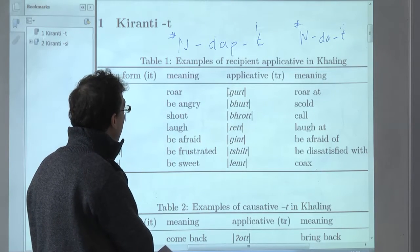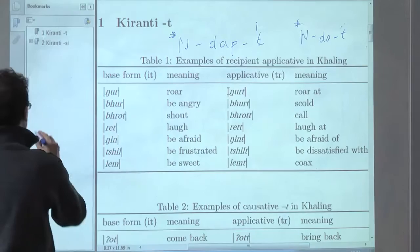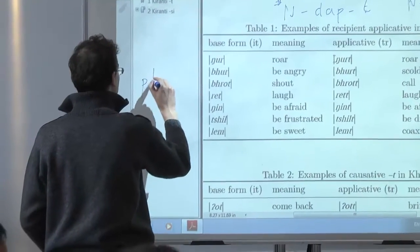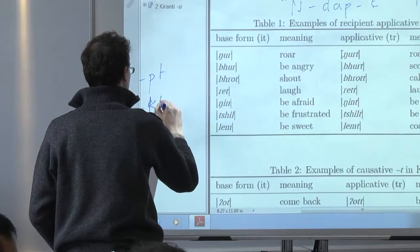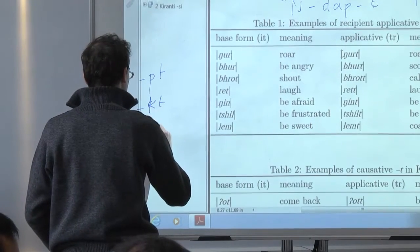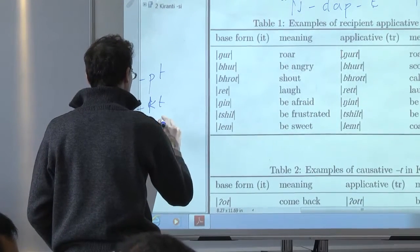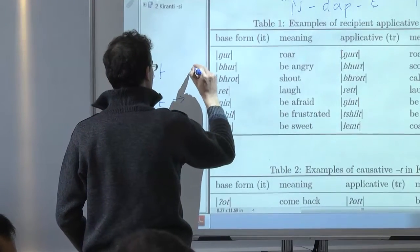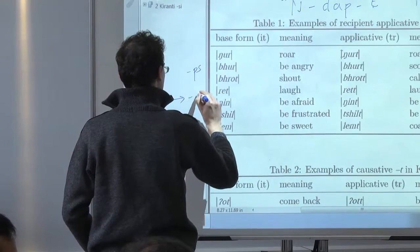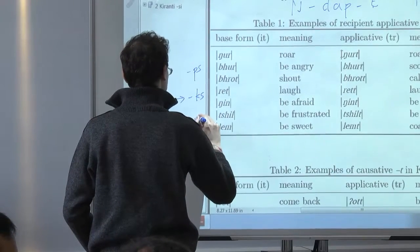And thus, we have a sound law in Tibetan telling you that pte, kte, mte, etc. change to pts, kts, mts, etc.